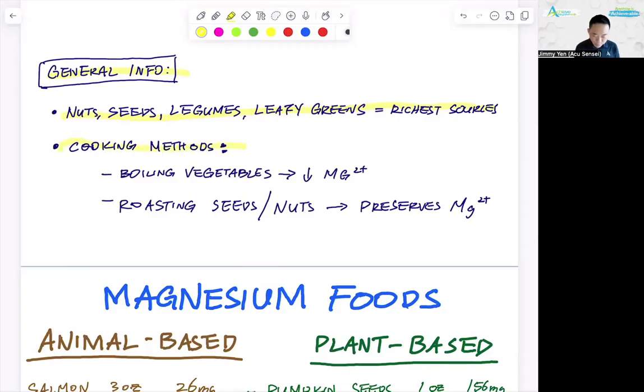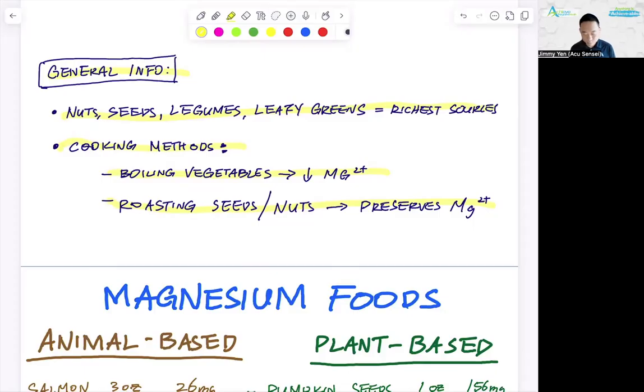Now, cooking methods, it's important to pay attention. When you boil vegetables, it does decrease the amount of magnesium available from the vegetables. Now when it comes to seeds and nuts, roasting them actually maintains, it preserves the magnesium. So when you eat nuts, seeds and nuts, you actually want to eat them roasted, not salted, unsalted, roasted. Vegetables boiling them, you can eat it raw. You can eat a salad dinnertime. If you boil them, blanch them very quickly.